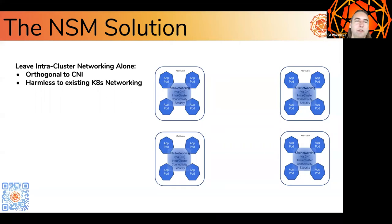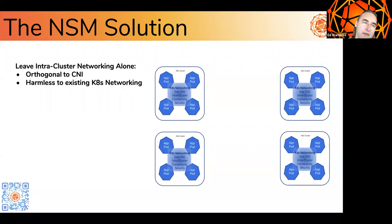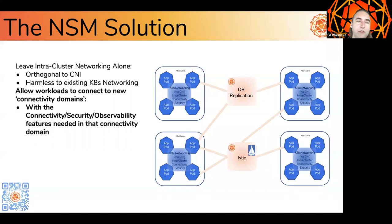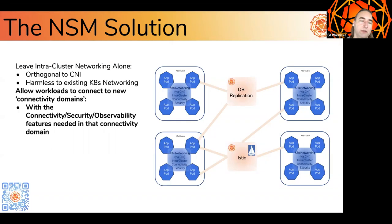This is where Network Service Mesh comes in. We rethought the problem entirely. Leave the intracluster networking alone — that works, let it be. NSM is completely orthogonal to CNI; we don't interfere with CNI, you don't have to run a special CNI plugin. We take great care not to mess with the intracluster networking you're used to. But it allows workloads to connect to new connectivity domains that provide whatever connectivity, security, and observability features you need.